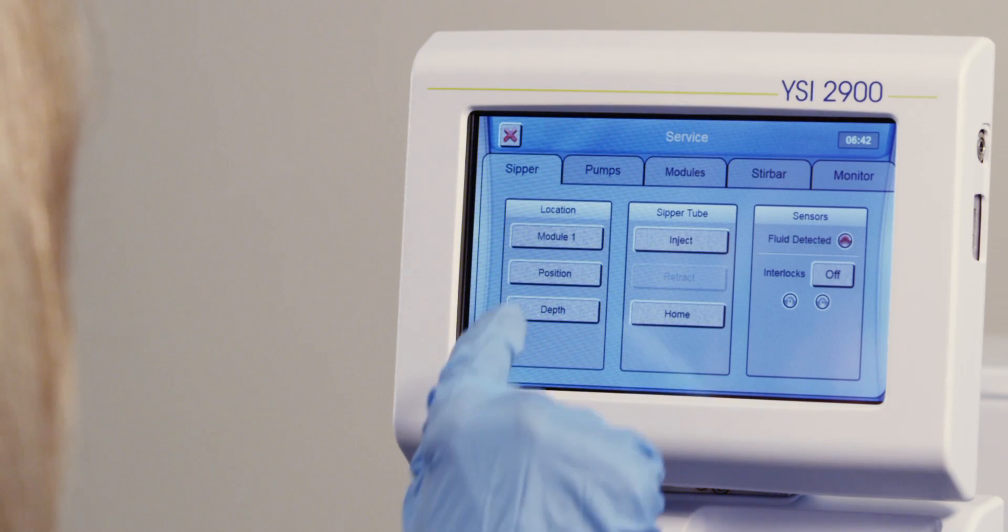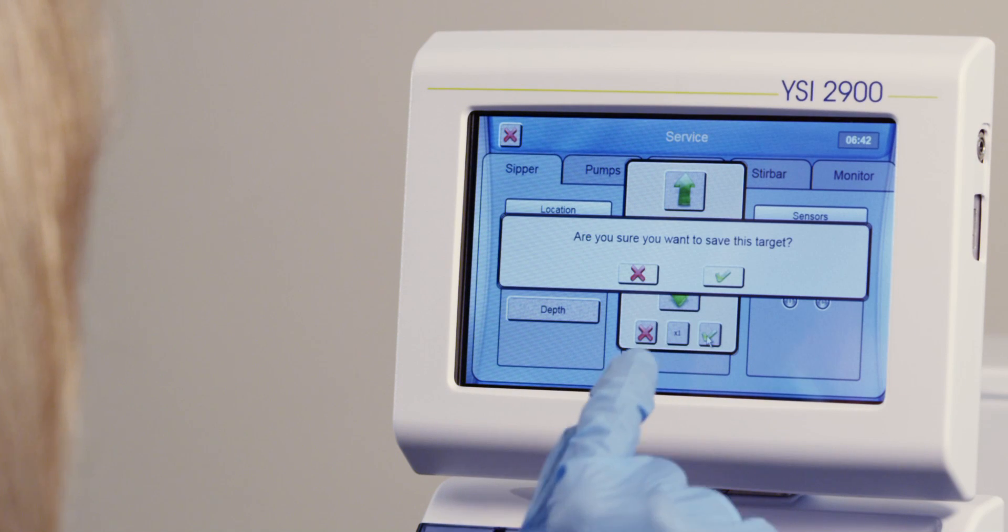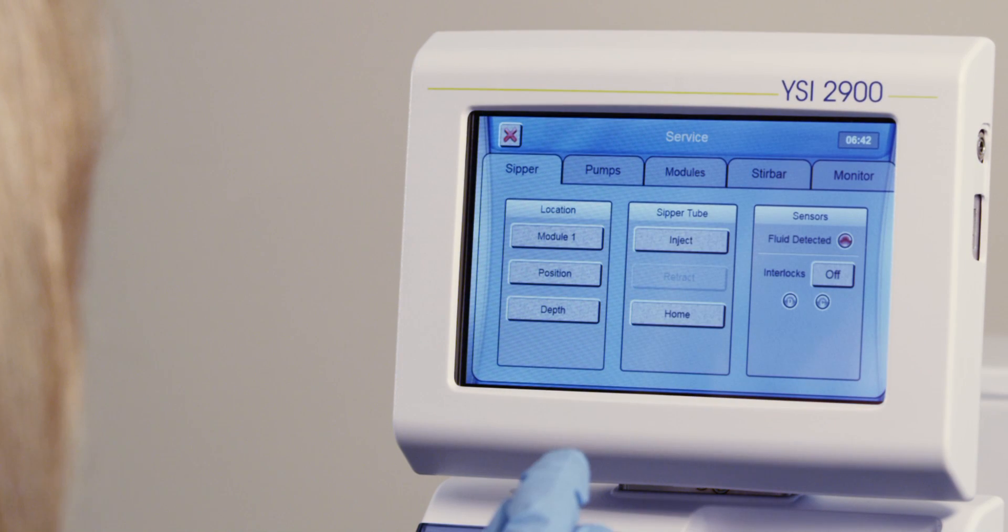Use the arrow keys to adjust the sipper so that it's centered over the top of the cone. To save the settings, press the green check mark.